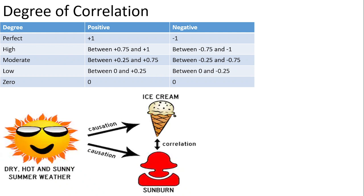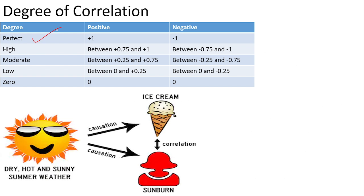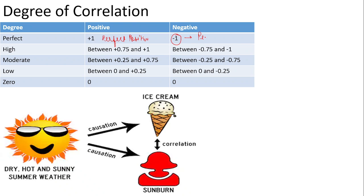First, to understand the scatter diagram, we need to understand the degrees of correlation. Under degrees of correlation, what types of correlation do we have? First, we have perfect correlation, which has two types: perfect positive and perfect negative. If your answer is exactly positive 1, so we say that our correlation is perfect positive correlation. If our answer is minus 1, we say that our correlation is perfect negative correlation.